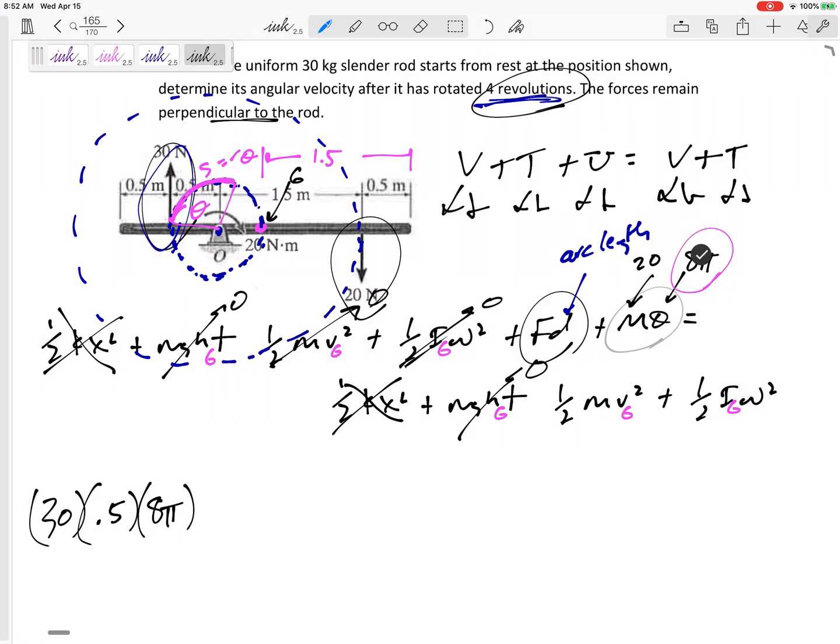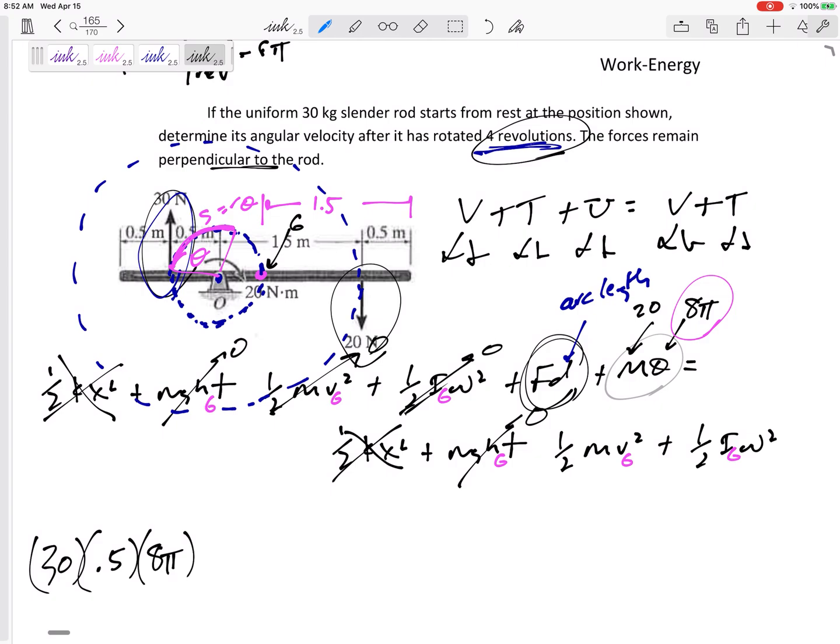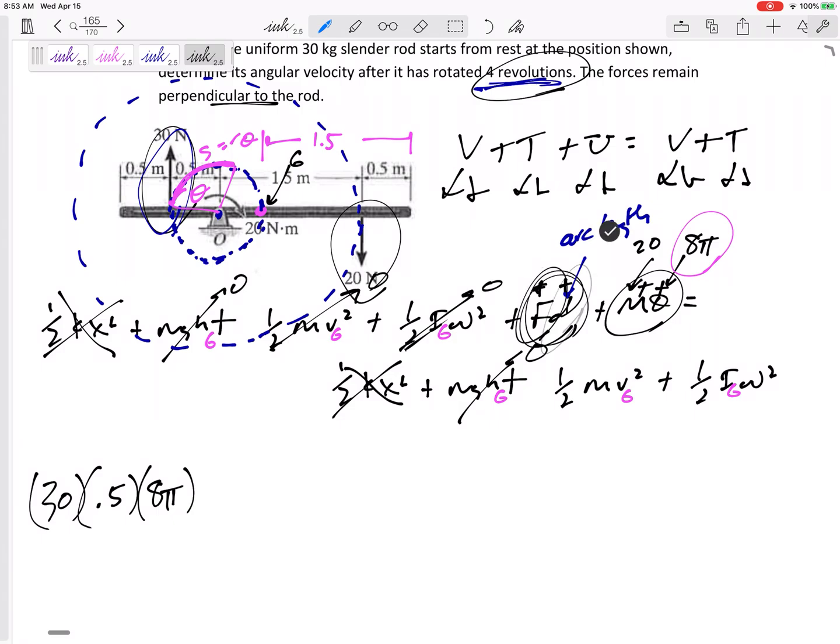Now this m theta, I don't think I've mentioned this in the notes. This Fd is positive when the force and the distance are in the same direction. This m theta is positive when they are both in the same direction. If the moment is clockwise and it is spinning clockwise, that's positive. If the moment is counterclockwise and the theta is counterclockwise, then it's plus m theta. But if the moment is counterclockwise but the theta is clockwise, like the moment is slowing it down, then that would be minus m theta. This force is going in the direction, so this would be plus F times d.